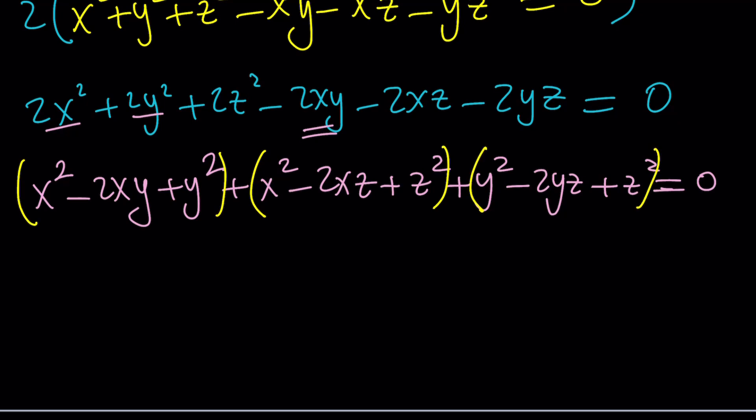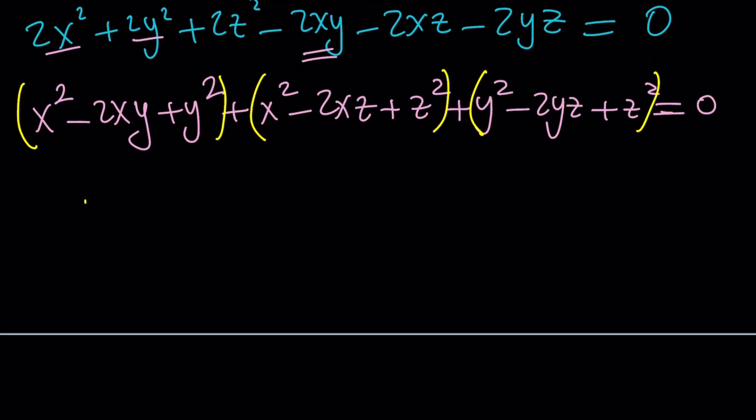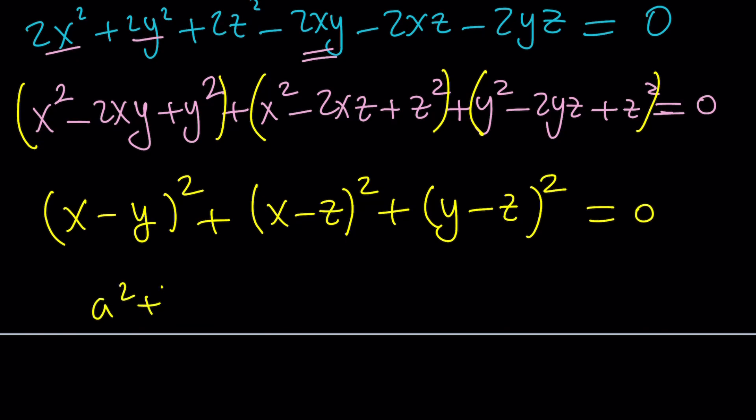And remember, x, y, z are real numbers. Did I say that? Hopefully, I did. Now, we get the following, x minus y quantity squared plus x minus z quantity squared plus y minus z quantity squared equals 0. Now, when you have a squared plus b squared plus c squared equals 0, and if a, b, c are real, this implies three things. a is equal to 0, b is equal to 0, and c is equal to 0. So, it's really nice that from a single equation, we can get three different results.